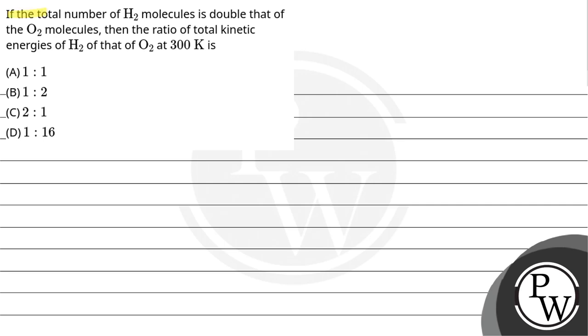Let's read the question: if the total number of H2 molecules is double that of the O2 molecules, then the ratio of total kinetic energies of H2 to that of O2 at 300 Kelvin is: (A) 1:1, (B) 1:2, (C) 2:1, (D) 1:16.